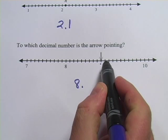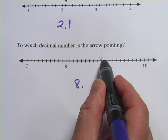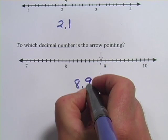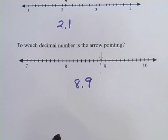So, that's the ninth hash mark. I probably could have figured that out by counting backwards from the 9 here, there's just 1 away, so I know this is going to be 8.9. So that's a little bit of work with the decimal number line.